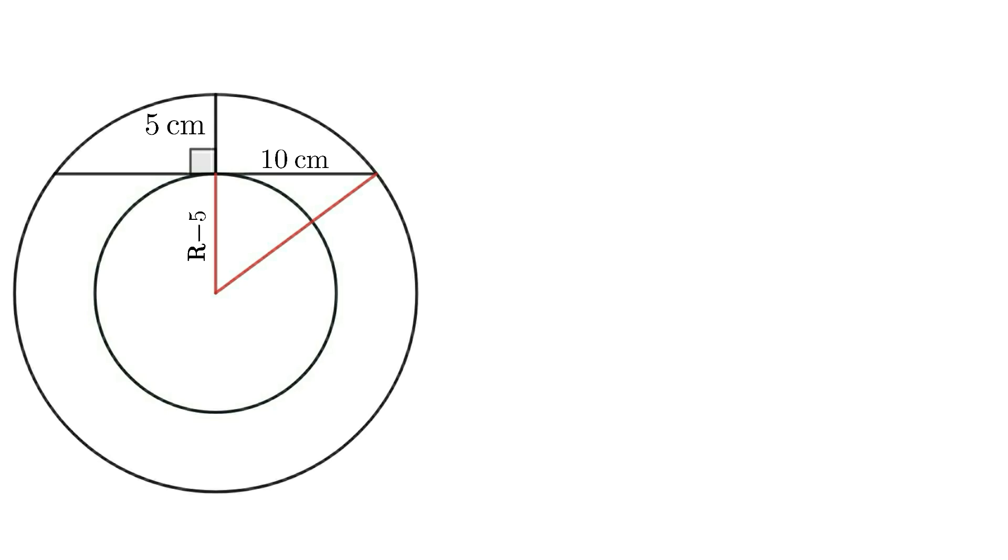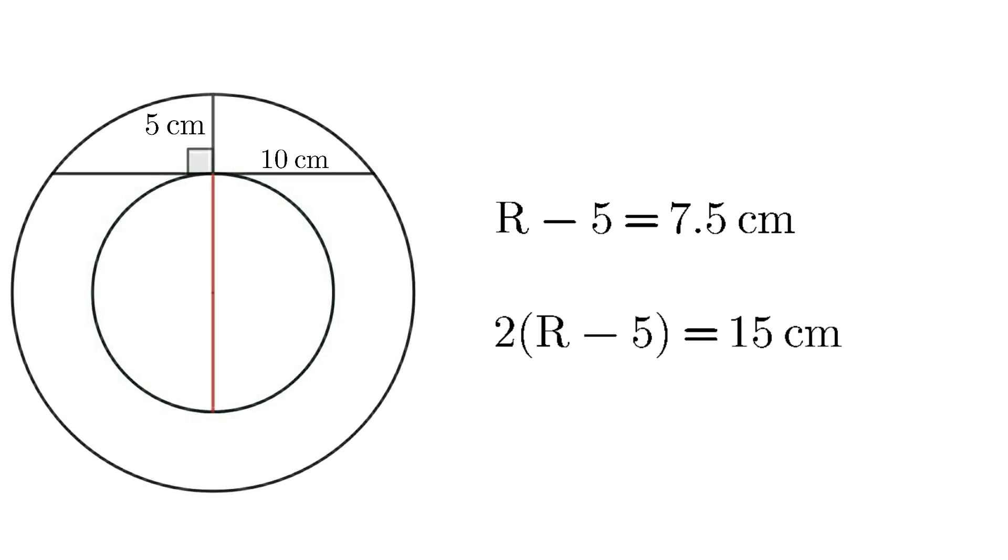The radius of the smaller circle is R-5, which equals 7.5 cm. So the diameter of the smaller circle is 2(R-5), which equals 15 cm.